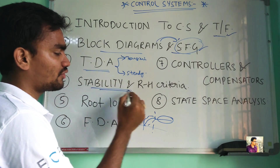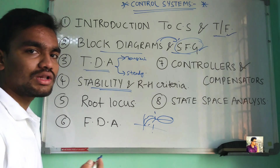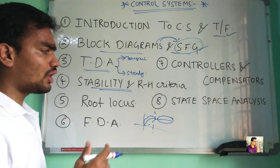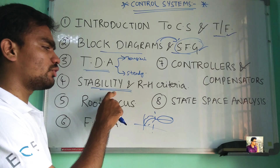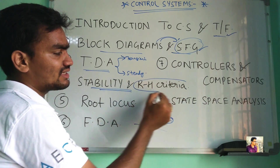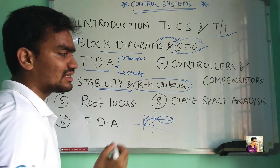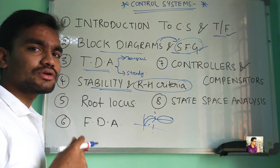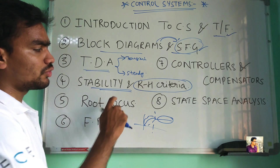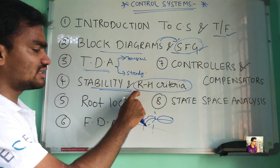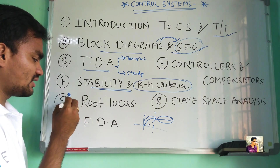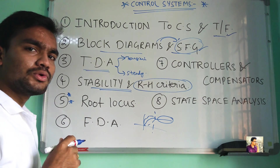Here we are going to discuss about the stability of the system — when we call a system stable, unstable, or marginally stable. All the stability conditions are going to be discussed, and a simple Routh-Hurwitz criterion which tells us whether the system is in a stable condition or not. This is the most important topic.